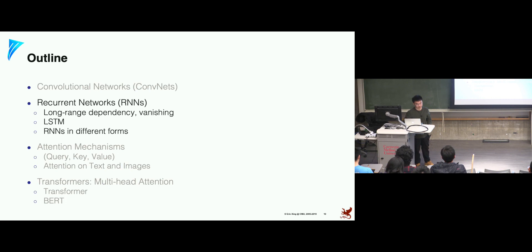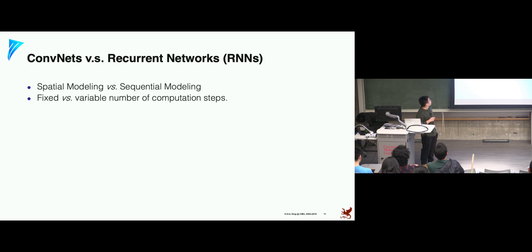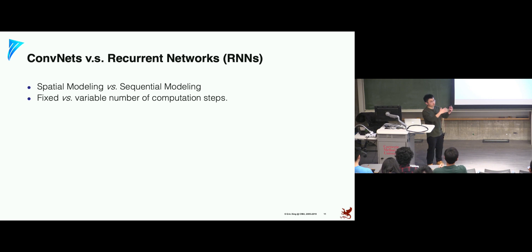The second part: recurrent networks. What's the difference between convolutional networks and recurrent networks? Convolutional networks are used for spatial modeling — given an image, we move the filter across the whole image to get spatially local features. Recurrent networks are different; they're for sequence modeling.